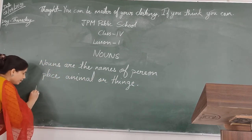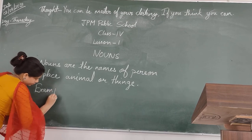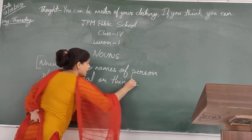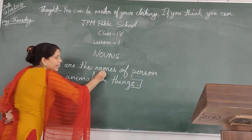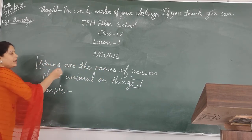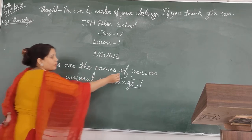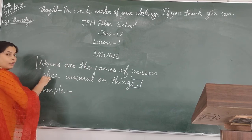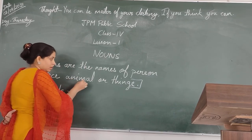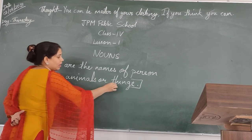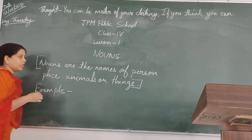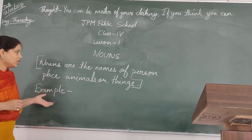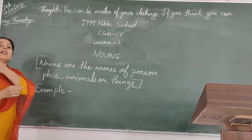For example, as this definition says, nouns are the names — names of persons, names of places, names of animals, or names of things. It means all the names of everything: persons, places, animals, and things. All those names are nouns.